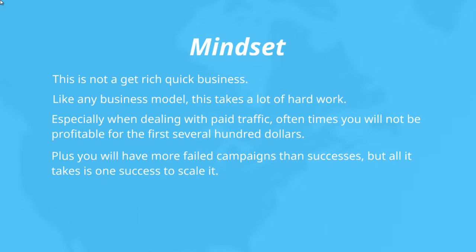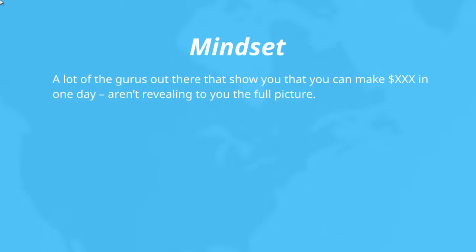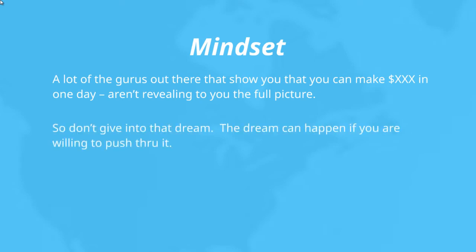The reality is that you're going to have more failed campaigns than successes, but all it takes is that one success to scale it. You might test 10 to 20 different campaigns, and out of those, you might find one or two that you can hone in on and begin to scale. A lot of gurus just show you the success part — they're not revealing the full picture. I'm going over this because I want you to understand the truth and the reality with full transparency. It's okay to dream, as long as you understand the reality and are willing to push through it.